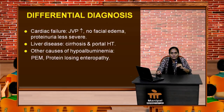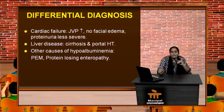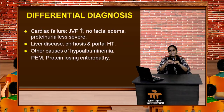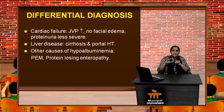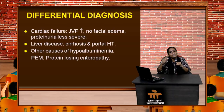For the differential diagnosis of nephrotic syndrome, the first consideration is congestive cardiac failure, where there will be elevated JVP — classical for right heart failure — no facial puffiness or periorbital swelling, and less severe proteinuria. In liver disease, cirrhosis and portal hypertension also cause edema, but there are telltale stigmata of cirrhosis. The edema is predominantly pedal edema and abdominal ascites. Other causes of hypoalbuminemia include protein energy malnutrition and protein-losing enteropathies.